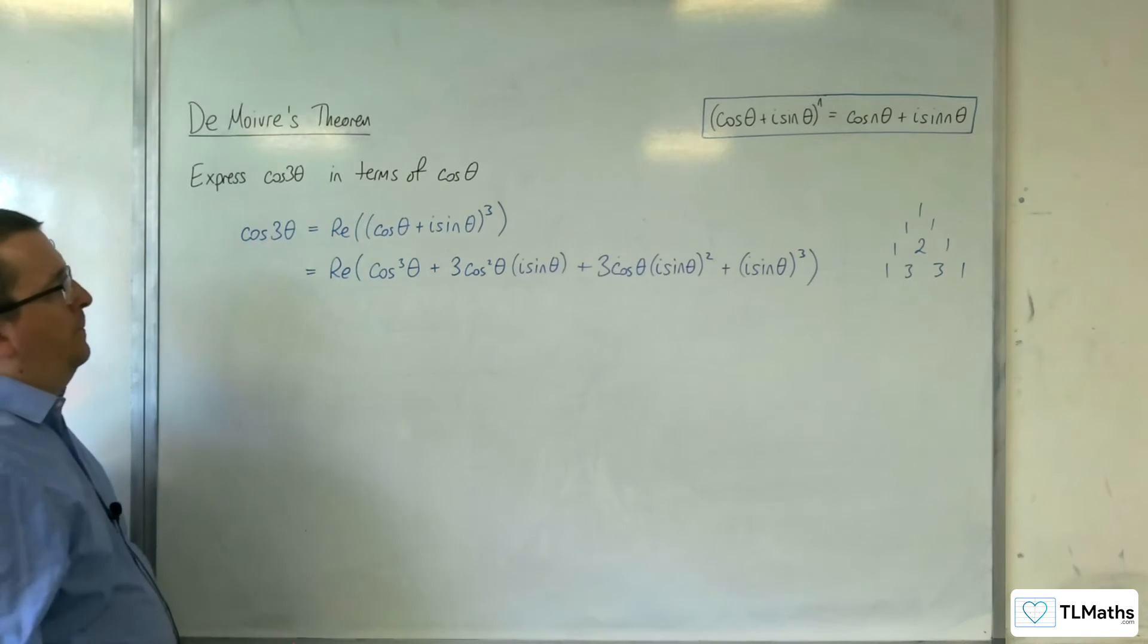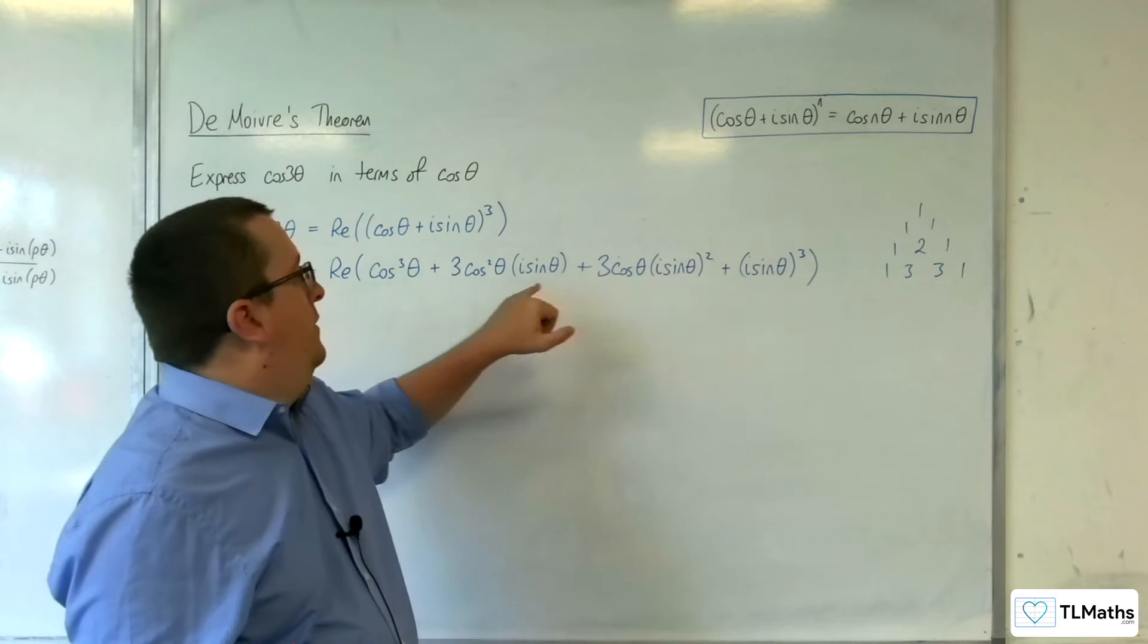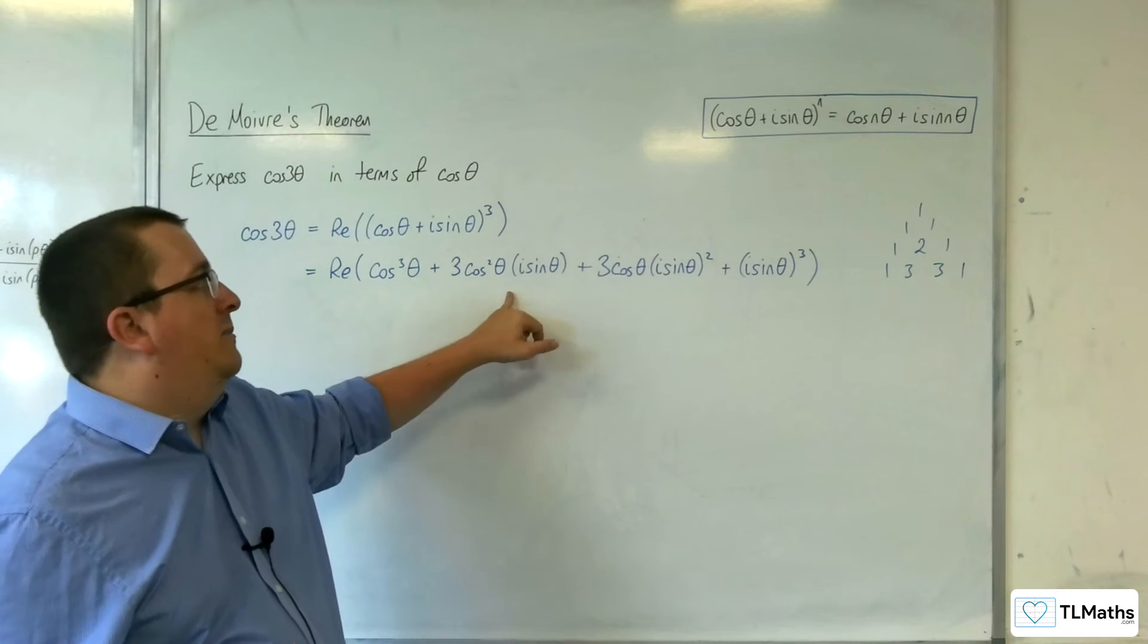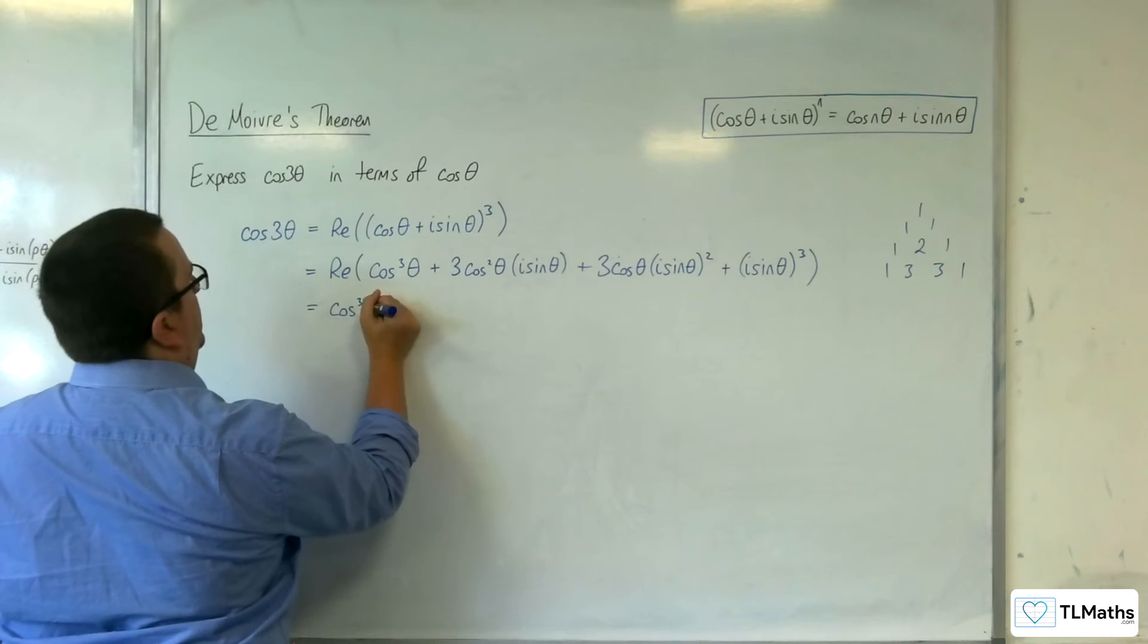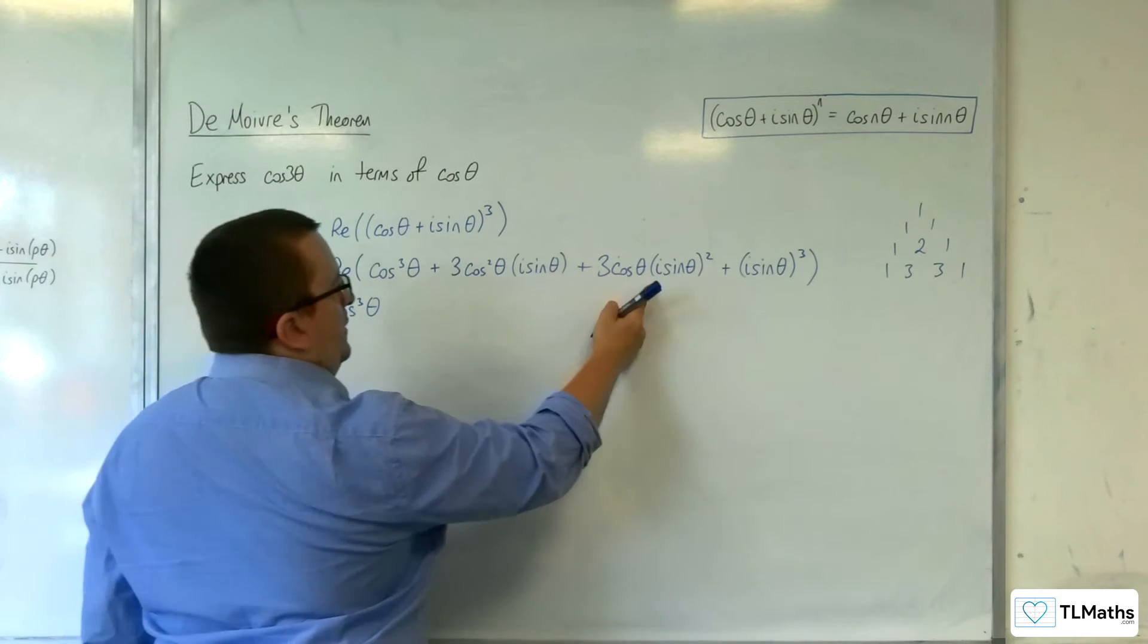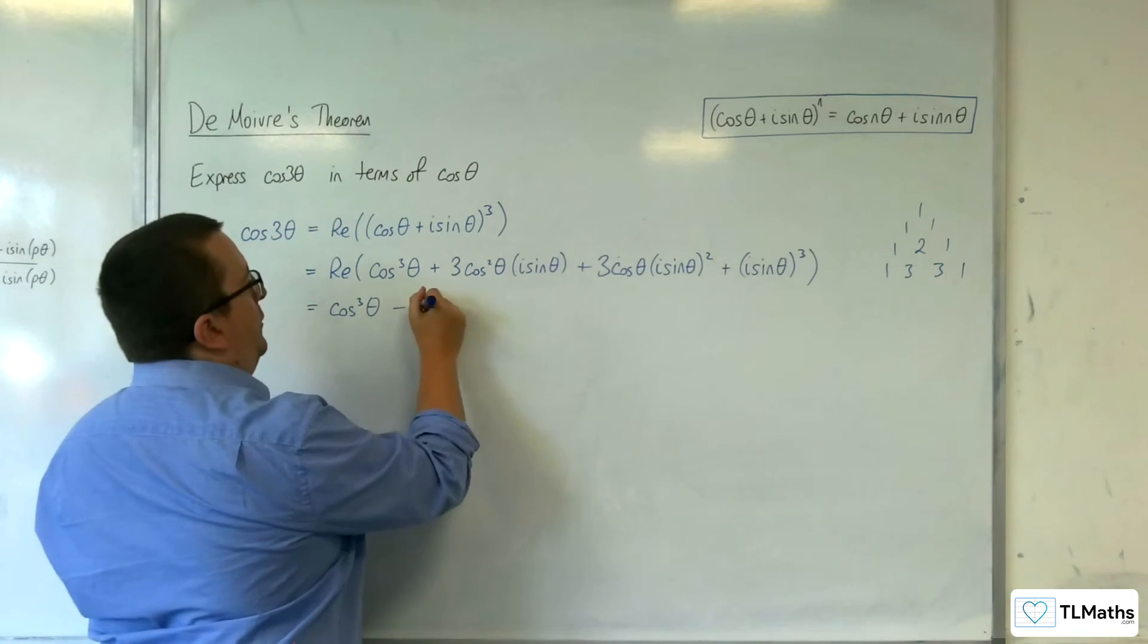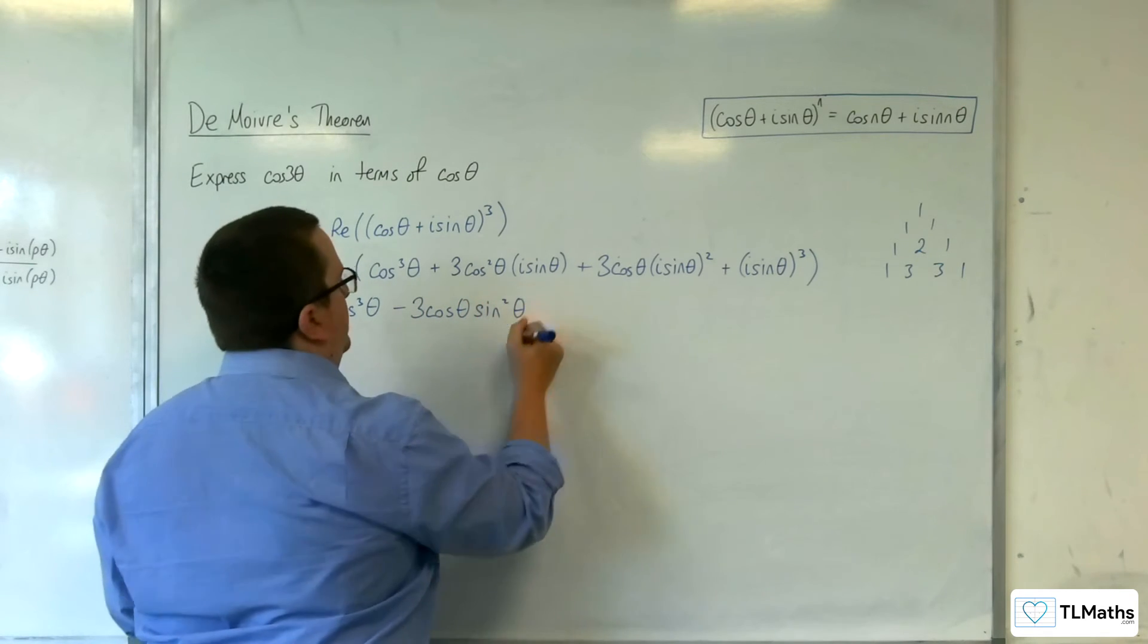Now we just want the real part. So I know that this and this I can ignore because they'll just give me the imaginary part. So it's just the cosine cubed theta and this term here. Now the i squared is obviously minus 1, so we have minus 3 cosine theta sine squared theta.